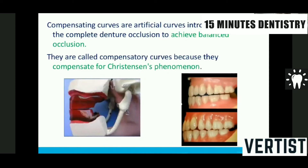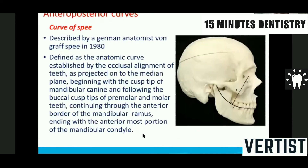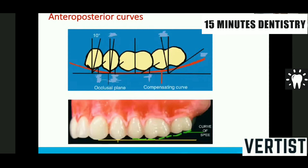The most important factor for balanced occlusion is compensating curves. Students should pay attention as this is commonly asked in viva exams. Compensating curves are artificial curves introduced in the complete denture to achieve balanced occlusion and compensate for Christensen's phenomena. There are two types: anterior-posterior and medial-lateral curves. The anterior-posterior curve is the curve of Spee, described by Von Graf in 1890, starting from the tip of the canine, passing through cuspal tips of all posteriors, to the anterior portion of the condyle. Teeth arrangement must follow the curve of Spee to establish balanced occlusion.